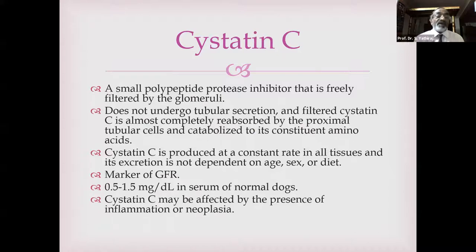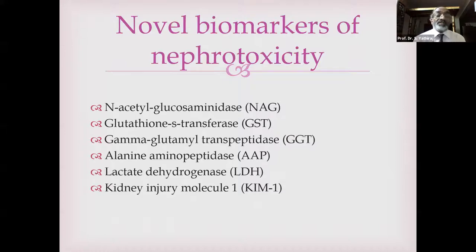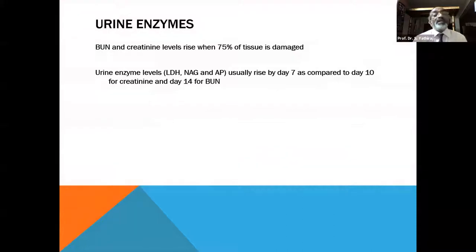The International Renal Interest Society (IRIS) grading of acute kidney injury: Grade 1 through Grade 5. In humans, anything beyond Grade 5 goes for hemodialysis, whereas up to Grade 3 is managed by fluid administration. Grade 5 creatinine above 10 mg/dL — in clinical practice, values of 12, 14, 16, 18, even 25–28 mg/dL creatinine on day one of evaluation are seen, and these do not fit neatly into this grading.